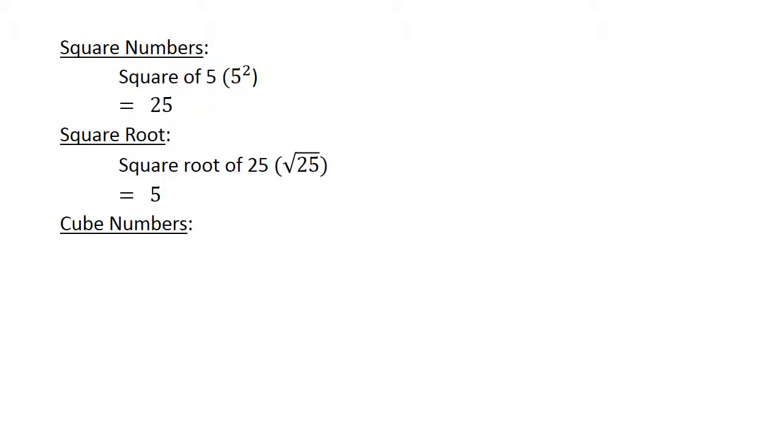Square numbers. The square of 5 equals 25. Square root of 25 equals 5. The cube of 5 equals 125. The cube root of 125 equals 5.